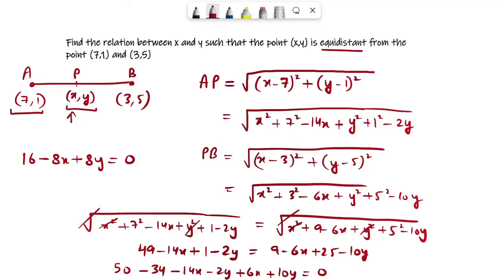So you get 16 - 8x + 8y = 0. Now what you can do is take 8 common from all of them. So you are left with 2 - x + y = 0. So the value you are getting is 2 - x + y = 0. So this is the answer to the first one. Now we will be moving to the second question.